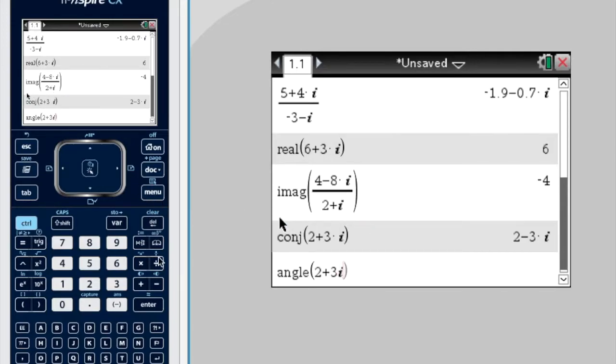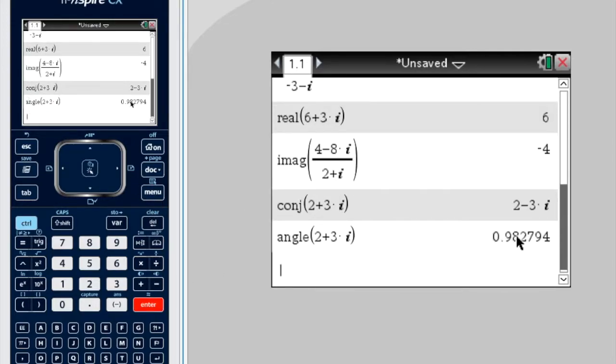Okay, so let's press enter. What does that mean? Now, 0.982794. So what does that even mean? Now, I'm thinking they're definitely giving us in radians.